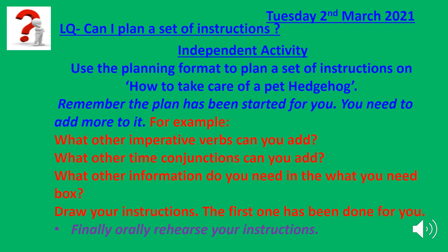Your independent activity today children is to use the planning format to plan a set of instructions on how to take care of a pet hedgehog. Remember the plan has been started for you. You need to add more to it — for example, what other imperative verbs can you add? What other time conjunctions can you add? What other information do you need in the what-you-need box? Draw your instructions — the first one has been done for you. And finally, orally rehearse your instructions.